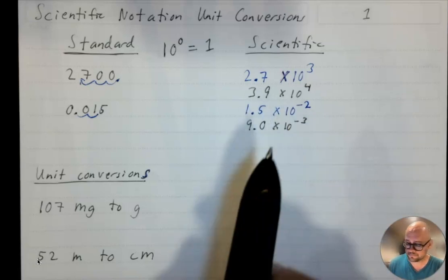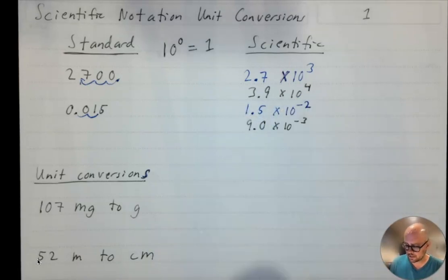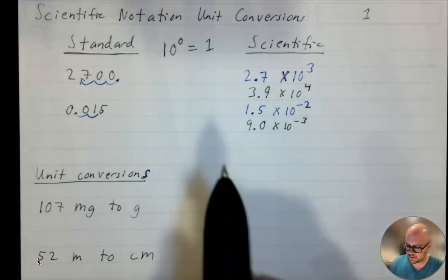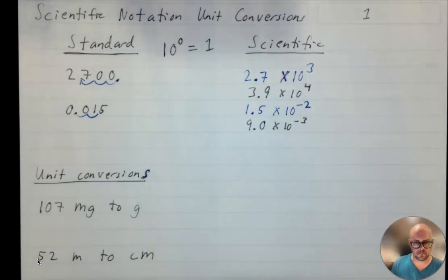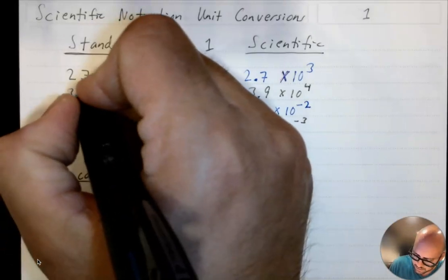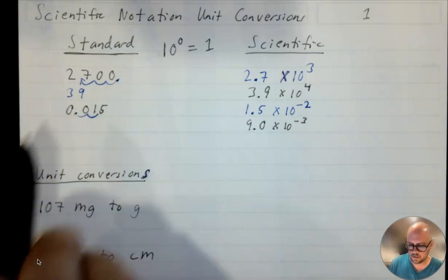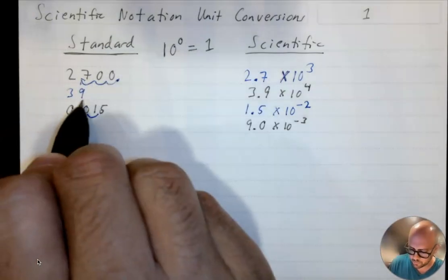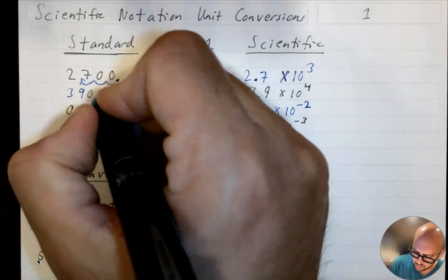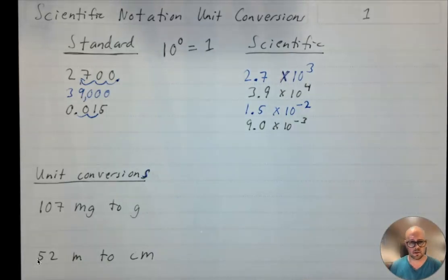Next up, I have 3.9 times 10 to the 4th. This is a positive exponent, so that means I'm going to make a big number. So 3.9 times 10 to the 4th — I move the decimal one place to get 39, then keep adding zeros until I get to 4 places: one, two, three, four. So the number is 39,000, which is 3.9 times 10 to the 4th.